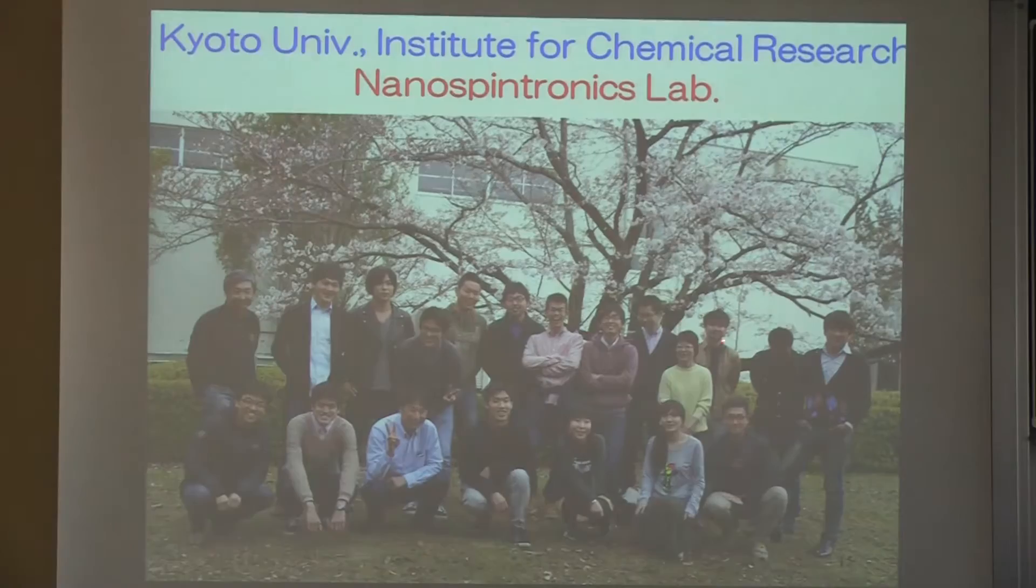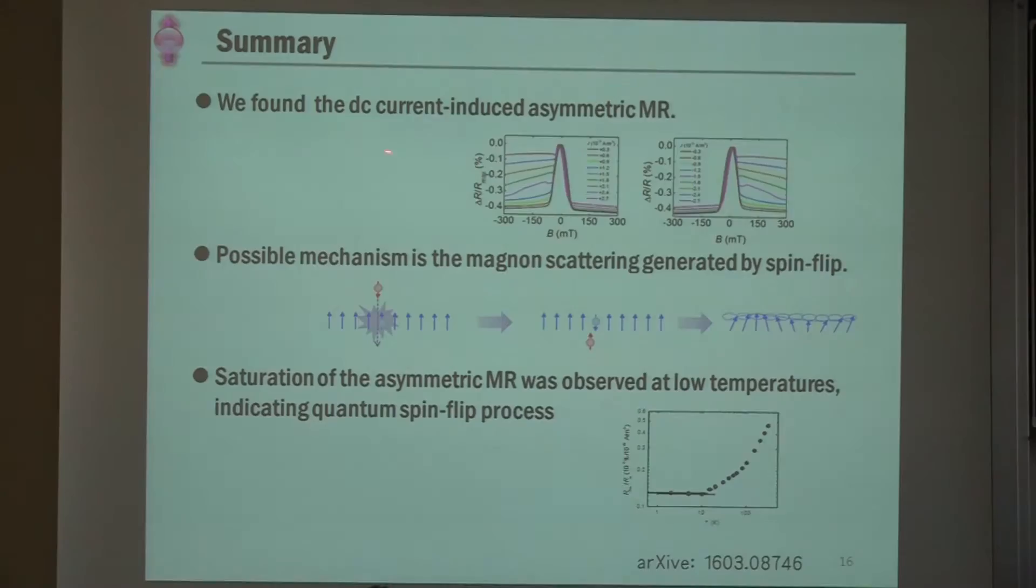This is a photograph of my group and nanoscopy lab of Kyoto University. Thank you very much. This is my summary. We found the DC current-induced asymmetric magnetoresistance like this. We proposed a possible mechanism as magnon scattering, which is generated by spin-flip scattering. We observed saturation of the asymmetric MR at low temperatures, indicating the existence of quantum spin-flip process at the lowest temperatures. Thank you very much. That's all.